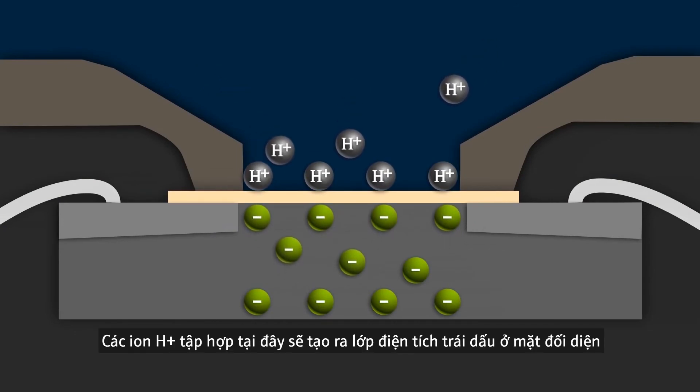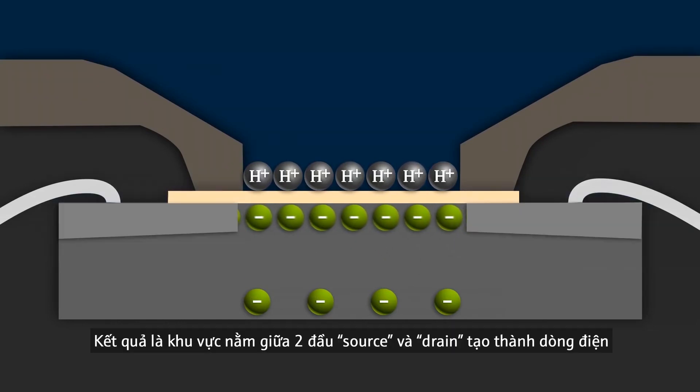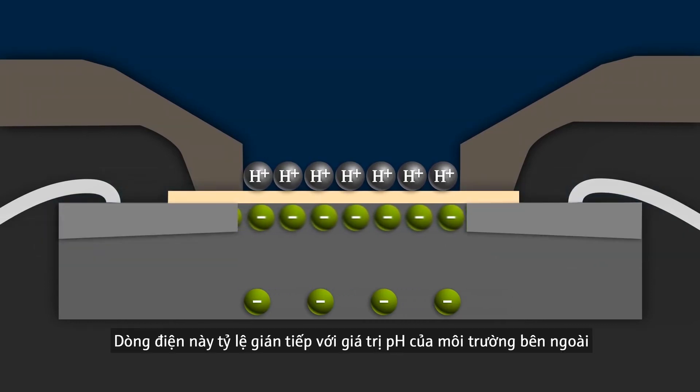Positive hydrogen ions forming at this layer cause the charge to be separated on the other side. As a result, the area between source and drain becomes conductive. The resulting flow of current is in direct proportion to the pH value of the medium.